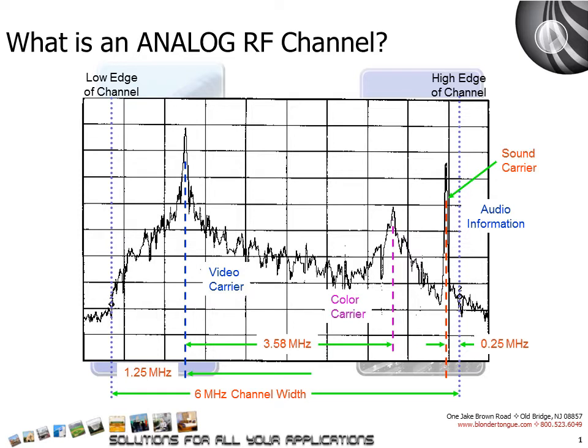What is an analog RF channel? All analog television channels have three carriers: one for video information, one for audio information, and one for color information. Analog television channels are no longer broadcast over the air from television stations. Most cable television companies have also ceased transmission of analog television channels in favor of digital channels. A spectrum analyzer plot of an analog television channel is seen below.